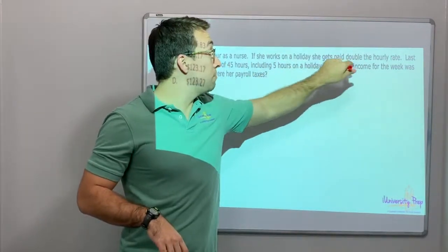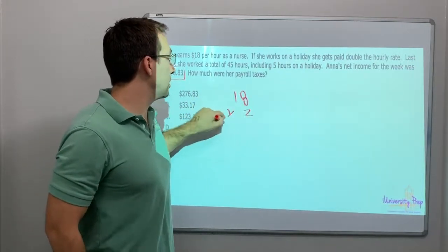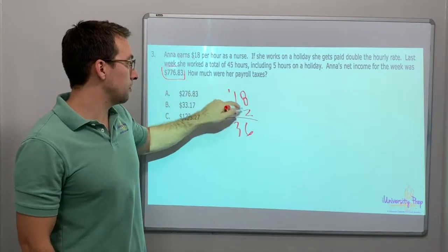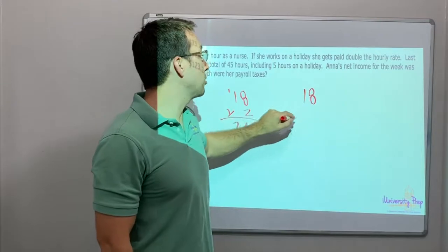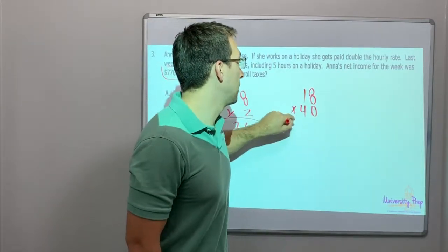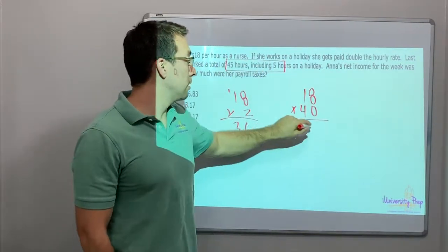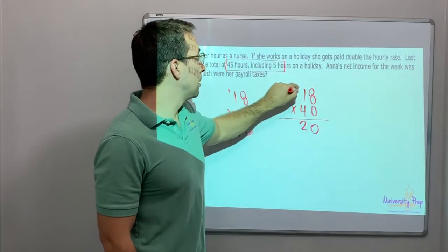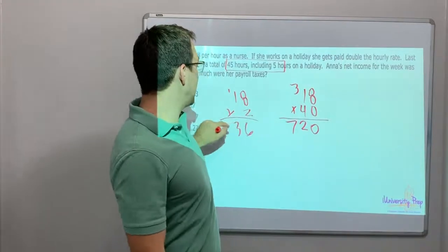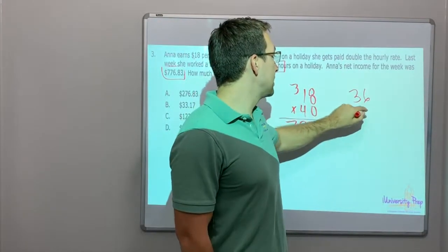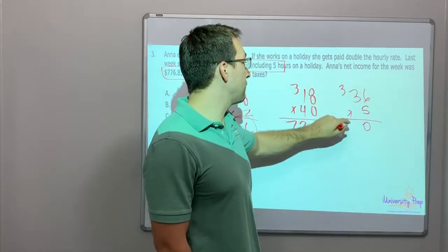$18 per hour. If she works a holiday, it's a double rate. So 18 times two is 36. Two times one is two plus three. 36. So she works $18 per hour times 40. Because look, she works 45 hours. Five hours is a holiday. So zero. Eight times four is 32. $720. Now we do $36 per hour times five.